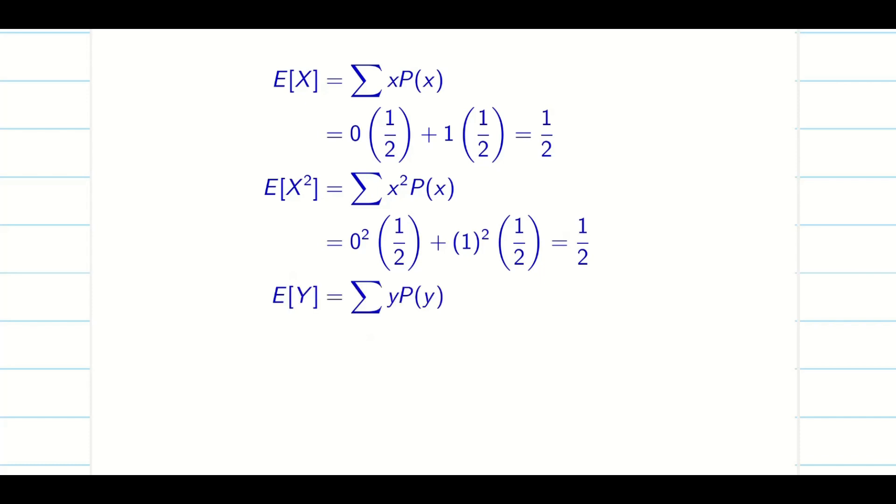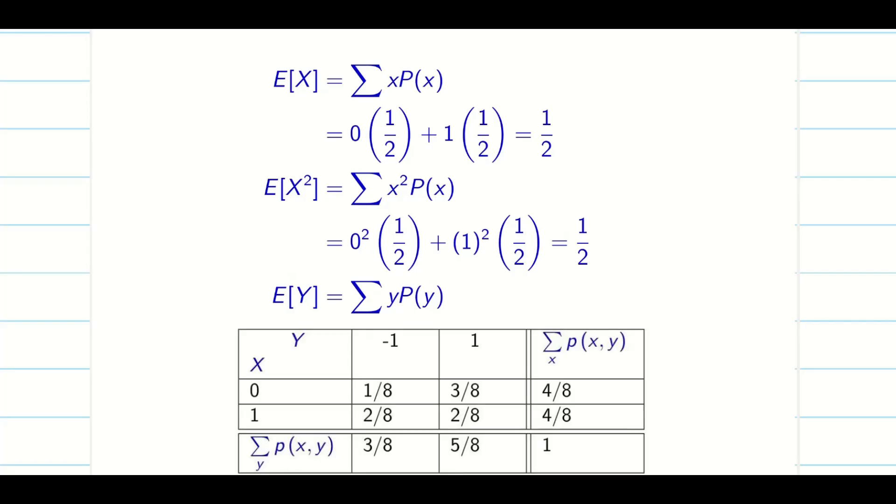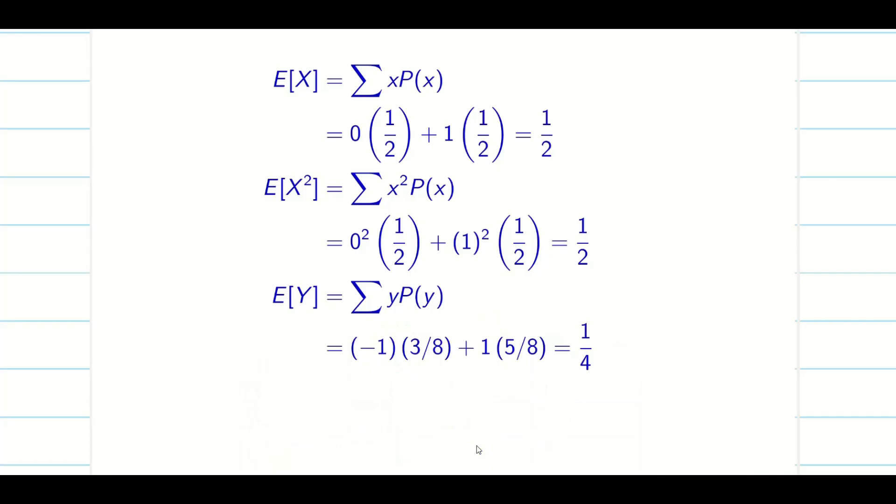In the similar way, I am going to find E of Y. We go to the table and take the value minus 1 times 3 by 8. Similarly, 1 into 5 by 8. When you multiply and add, we will be getting 1 by 4.